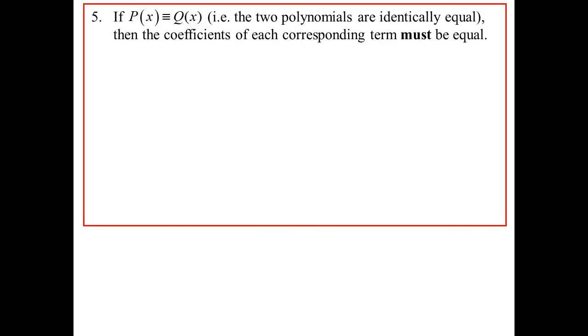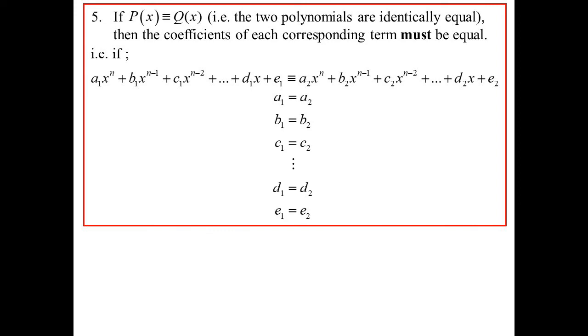All right, that brings us to the fifth one here. If you've got two polynomials that are congruent, so that's why I've got the three lines there, just like in geometry, it means exactly the same thing. Remember, it means they are identically equal. They are perfect copies of each other. Then the coefficients of each corresponding term must be equal. So if we're saying this polynomial on the left is congruent to this polynomial on the right, then A1 must equal A2, B1 must equal B2, C1 must equal C2, and so on. They've got to be equal in every single respect.